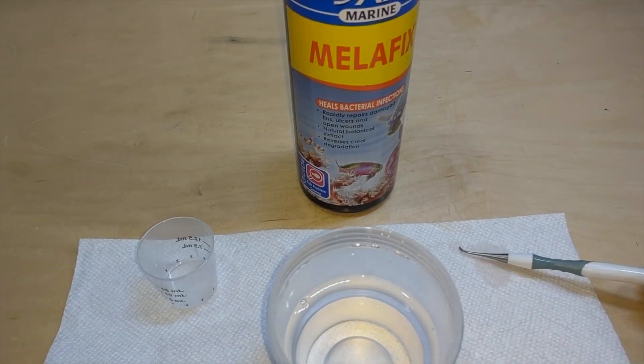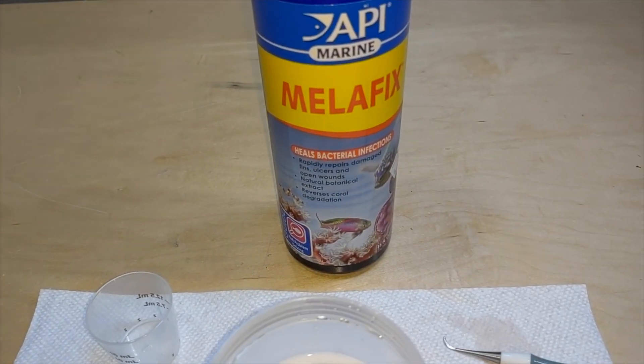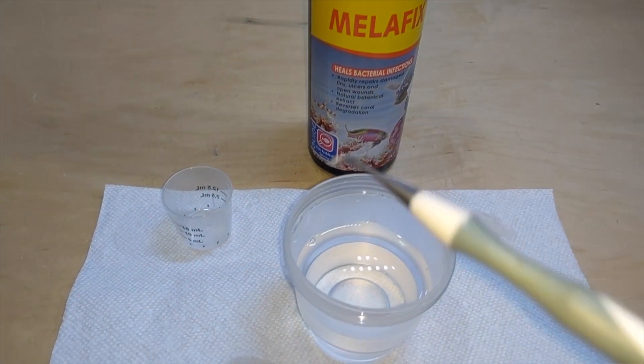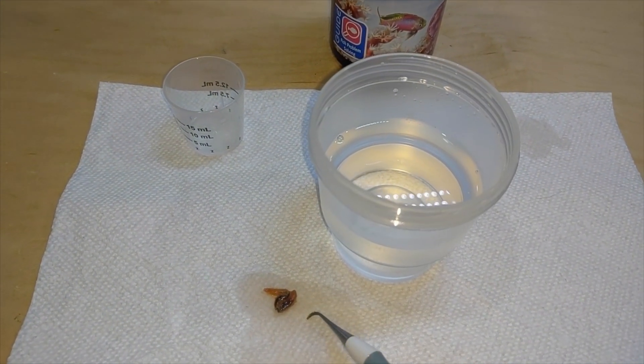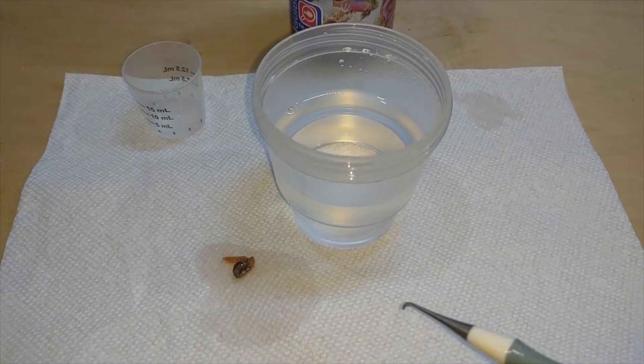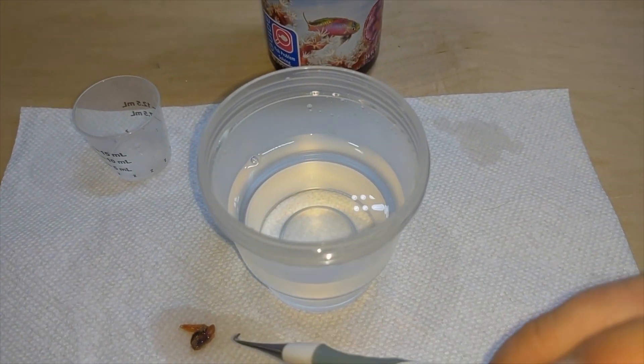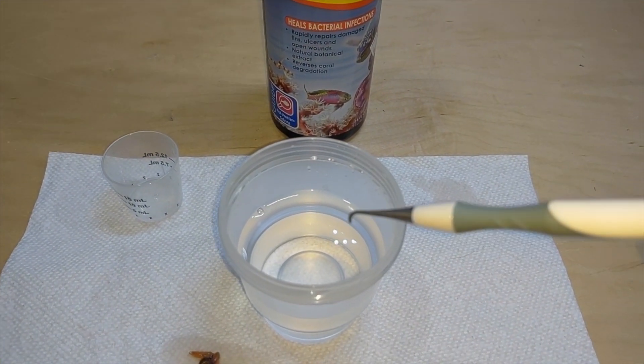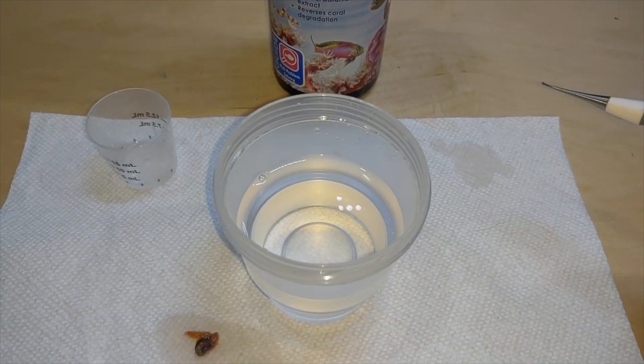So yeah, wanted to give you this quick little update on how fast MelaFix will kill bristle worms. It kills flatworms even quicker. I have seen a video from a buddy - he did a really good close-up and added drop by drop of MelaFix to a little tiny bit of water with a flatworm in it, and the flatworm literally just disintegrates and falls apart, and it was awesome looking.